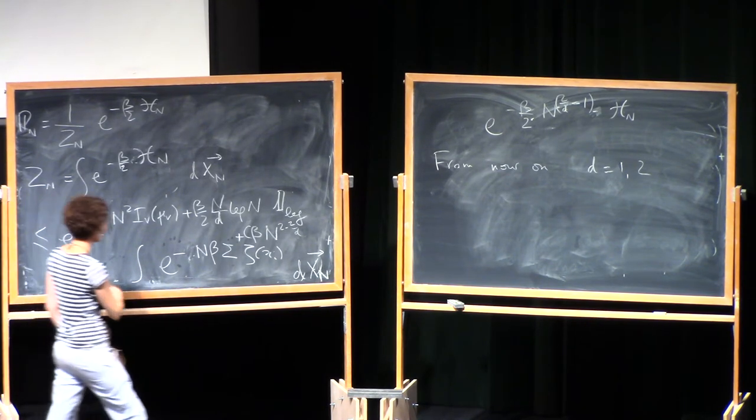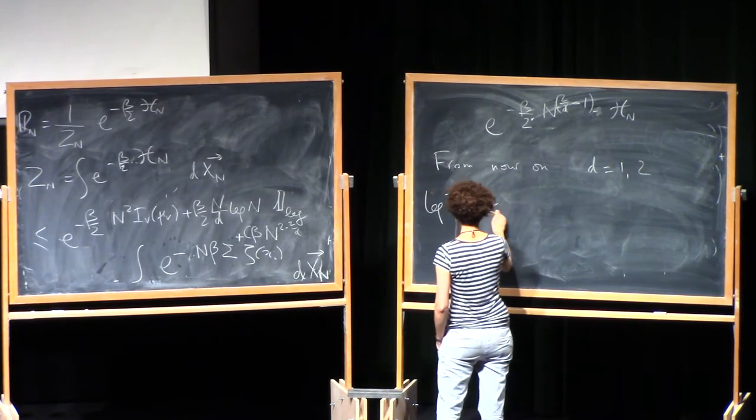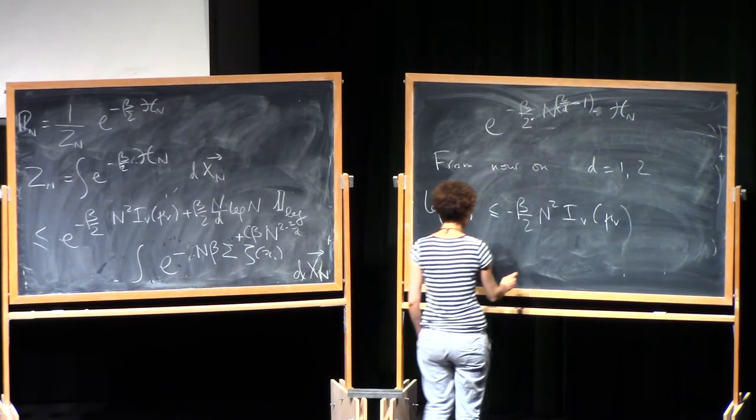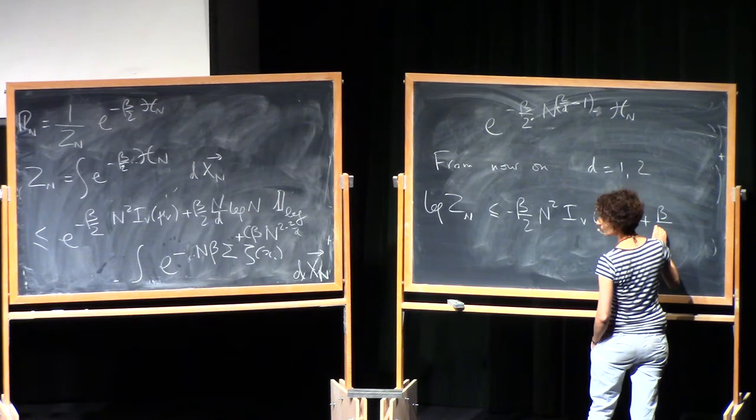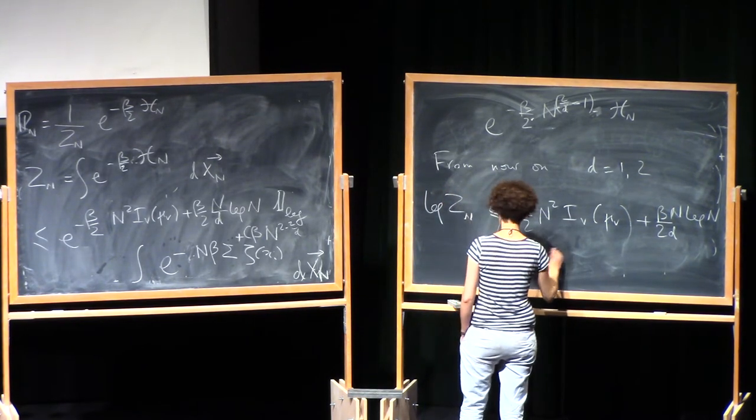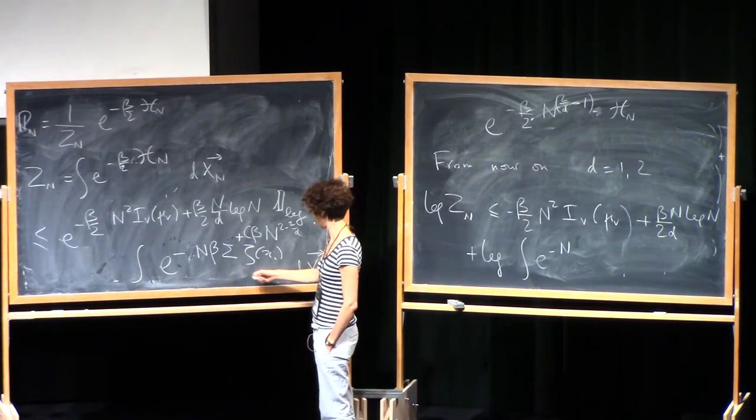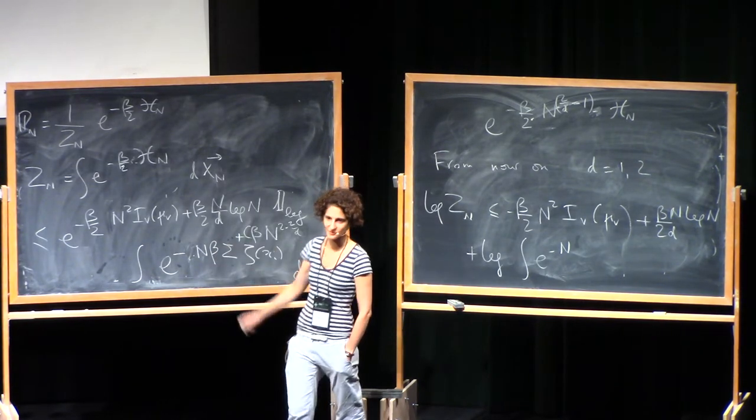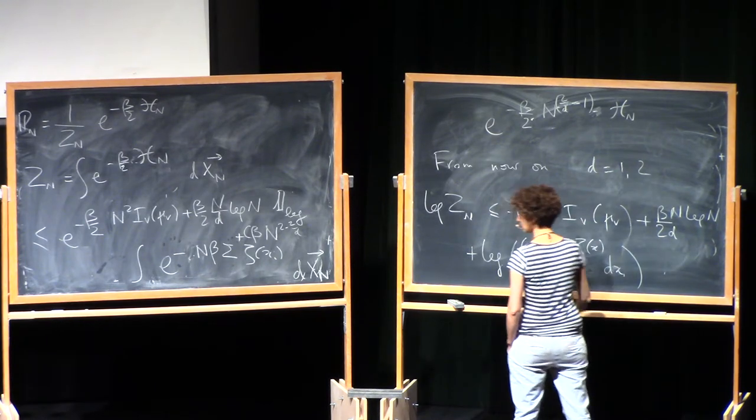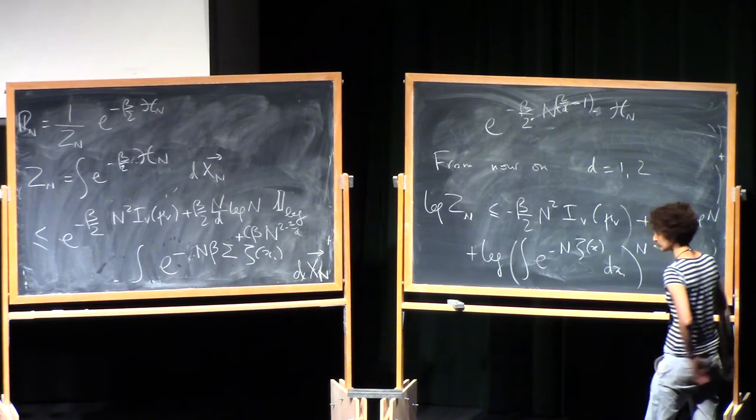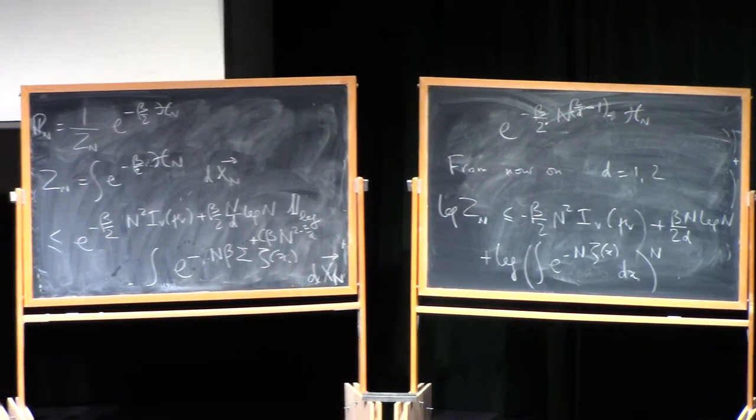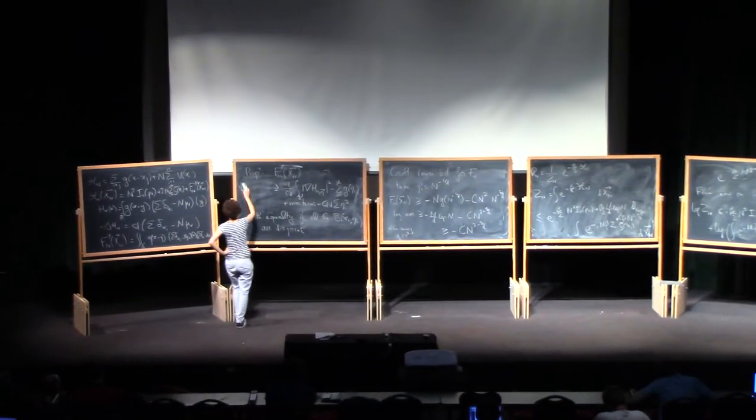All right. So if I continue here, I have obtained an upper bound. Log z_n is bounded from above by this plus an n log n term, which is fixed. And then I have the log of this. And now observe that this is an integral of n variables, but you can separate the variables. So the exponential of a sum is the product of the exponentials. And in fact, it's exponential minus n zeta of x dx to the power n.